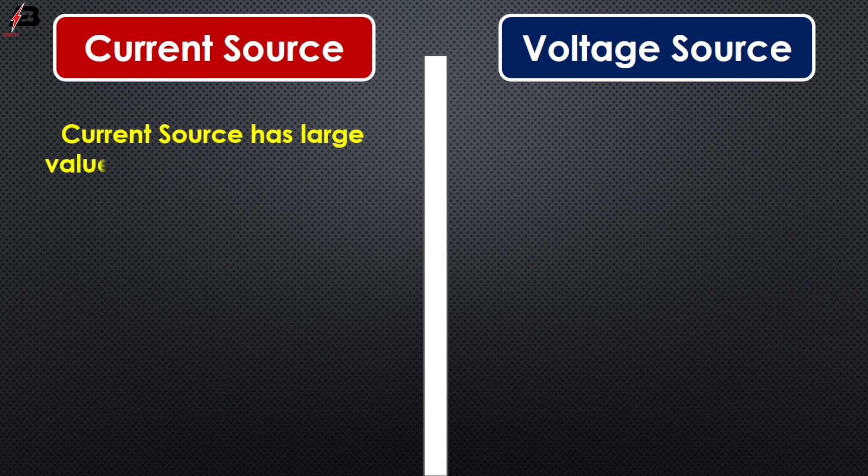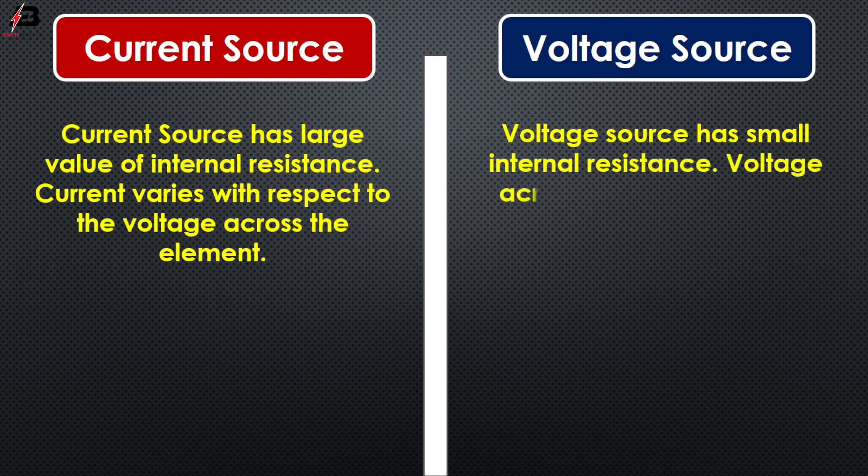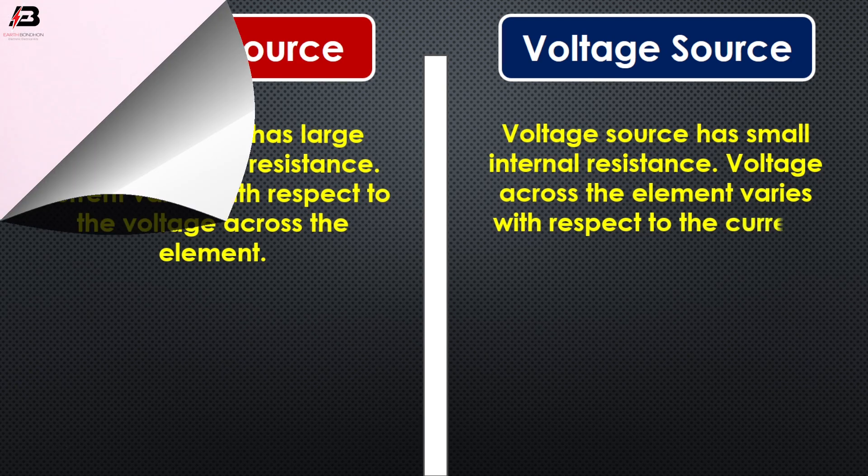Current source has large value of internal resistance. Current varies with respect to the voltage across the elements. Voltage source has small internal resistance. Voltage across the element varies with respect to the current.